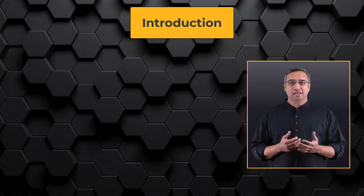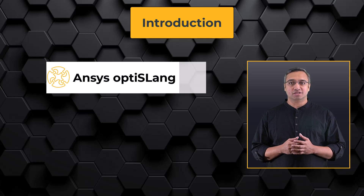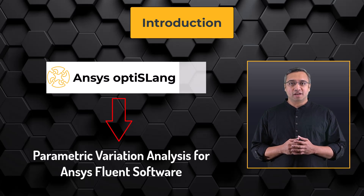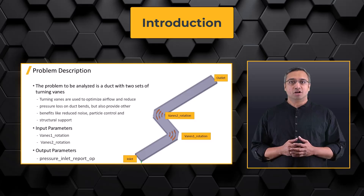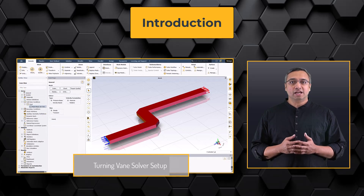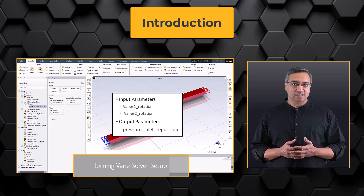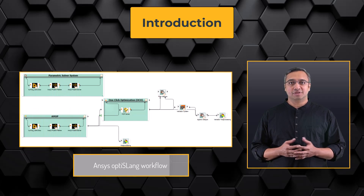Hello and welcome. In this course, we will learn how to use ANSYS OptiSlang process integration and design optimization software to perform parametric variation analysis for ANSYS Fluent fluid simulation software through an example problem. In this lesson specifically, we will go over the problem description of a duct containing turning vanes, explore the geometry, the mesh, the ANSYS Fluent solver setup, and the input and output parameters involved in the analysis. Furthermore, we will briefly discuss the tasks in this analysis and the corresponding ANSYS OptiSlang workflow. Let's get started.